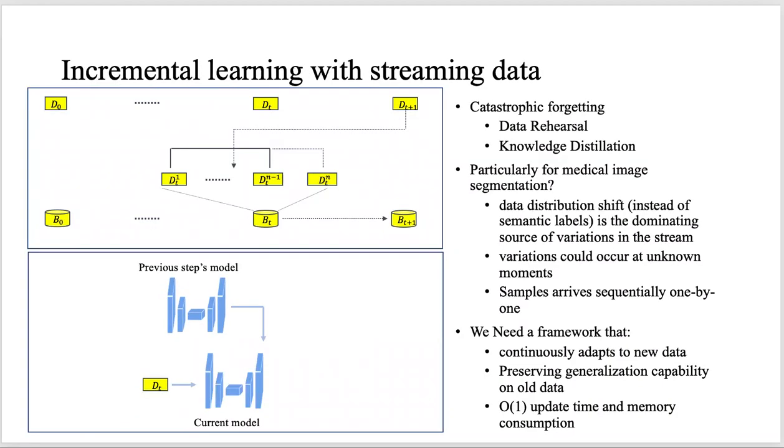So far, incremental learning seems to be the rescue for us. When learning with streaming data, catastrophic forgetting is the most fundamental challenge due to the shifts in learning tasks and data distribution. Two most common successful strategies to deal with catastrophic forgetting are data rehearsal and knowledge distillation.